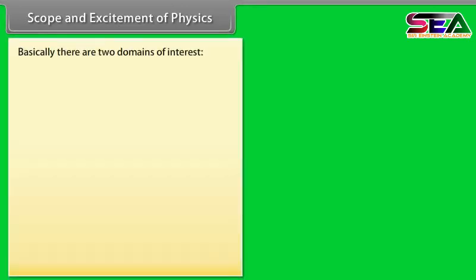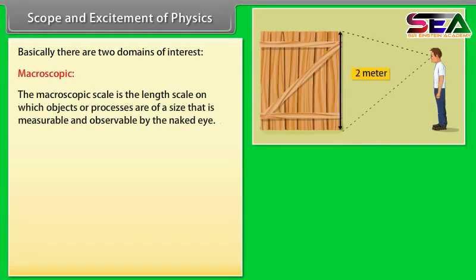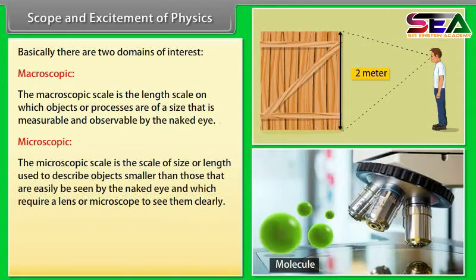Scope and excitement of physics. From a person beginning to work to communication over thousands of kilometers, physics has very wide scope. Basically there are two domains of interest: Macroscopic - the macroscopic scale is the length scale on which objects or processes are of a size that is measurable and observable by the naked eye. Microscopic - the microscopic scale is the scale of size or length used to describe objects smaller than those that are easily seen by the naked eye and which require a lens or microscope to see them clearly.